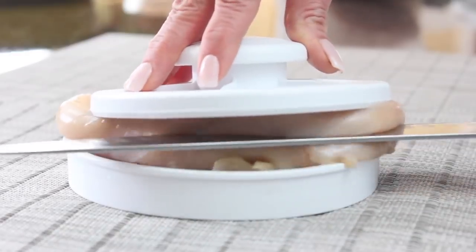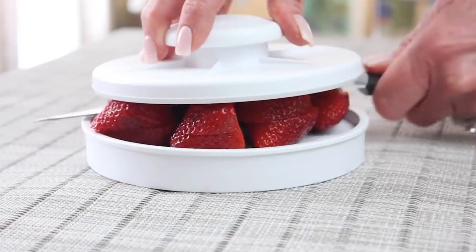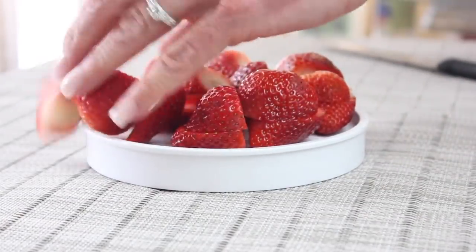It allows for any size rolly, round produce, meat, or bagel. Non-slip feet keep it safely stationary, and top lid with handle protects your hand from the knife blade.